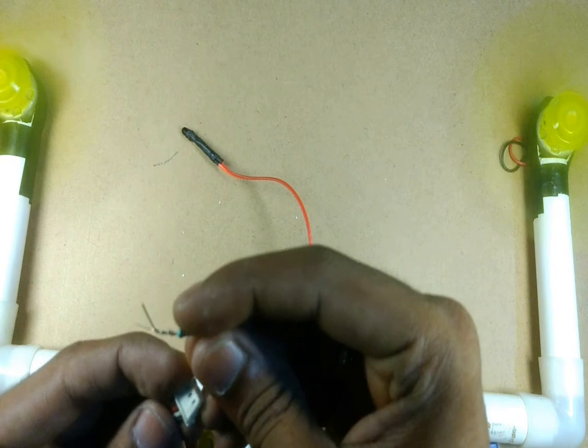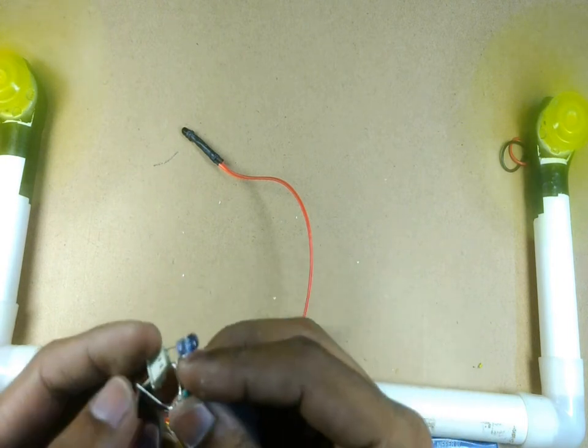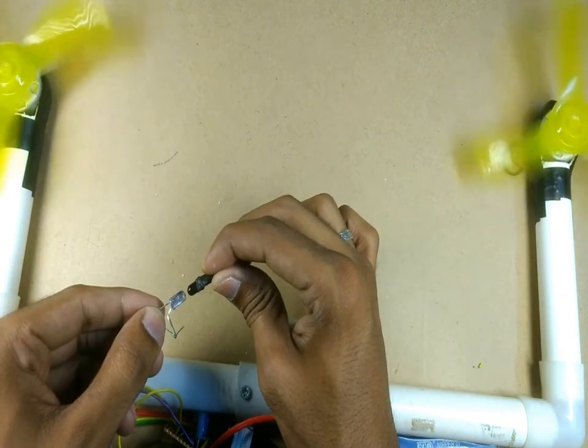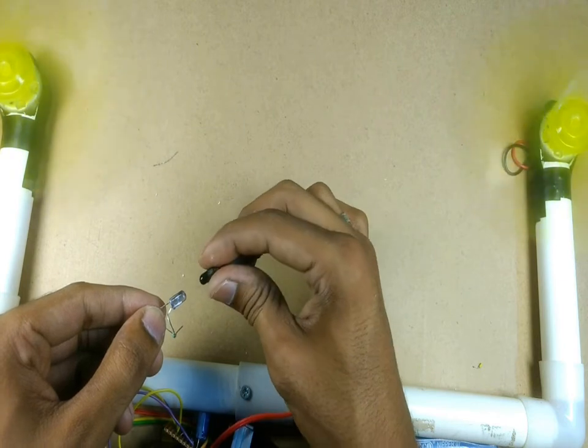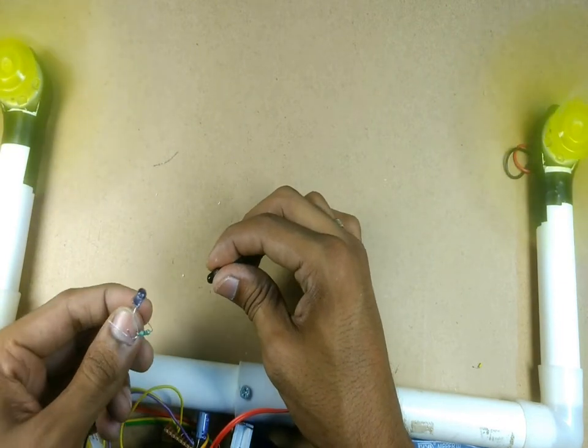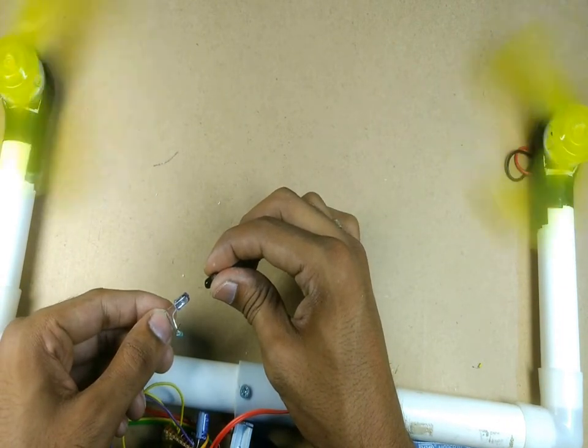I am using a 3.7V battery to power this LED. As you can see, when I bring the IR LED in line with the photodiode, the fans tend to slow down and stop in a moment. That means the circuit is working.